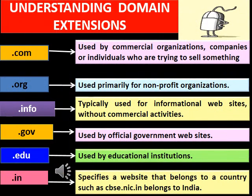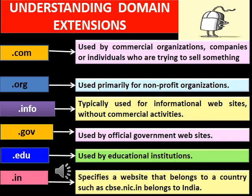Domain extensions have different purposes and are used by different organizations. '.com' is used by commercial organizations or companies trying to sell something, for example amazon.com. '.org' is used by non-profitable organizations. '.info' is used for informational websites without commercial activities. '.gov' is used by government organizations. '.edu' is used by educational institutions. '.in' specifies a website belonging to a country — for example, cbse.nic.in belongs to India.